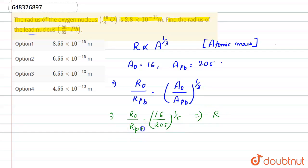So radius of Pb is equal to 205 upon 16 to power 1 upon 3 into the radius of oxygen, that is given to be equal to 2.8 into 10 power minus 15 meters.